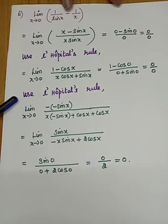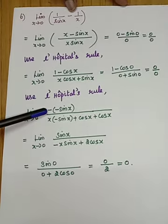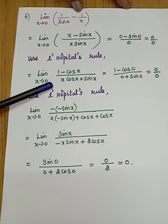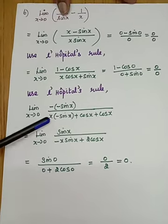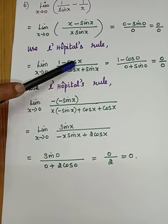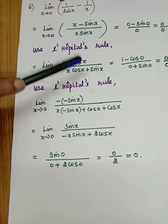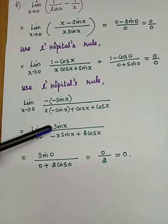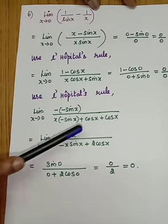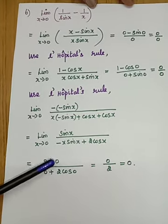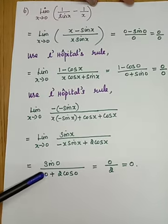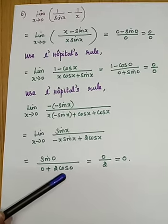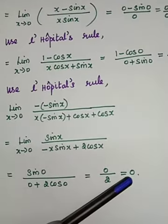Apply L'Hôpital's rule a second time: differentiate numerator 1 − cos x to get sin x. For the denominator x·cos x + sin x, use the product rule on x·cos x: x·(−sin x) + cos x·1 = −x sin x + cos x; plus the differentiation of sin x gives cos x. So the denominator becomes −x sin x + cos x + cos x = −x sin x + 2cos x. Apply the limit as x→0: sin(0)/(0·sin 0 + 2·cos 0) = 0/(0 + 2) = 0/2 = 0. The answer is 0.